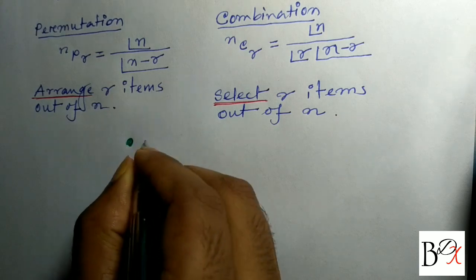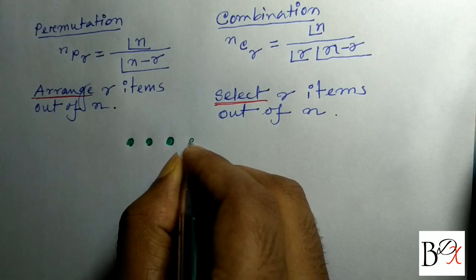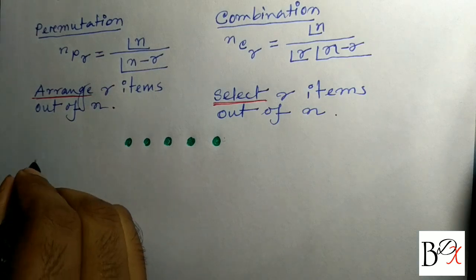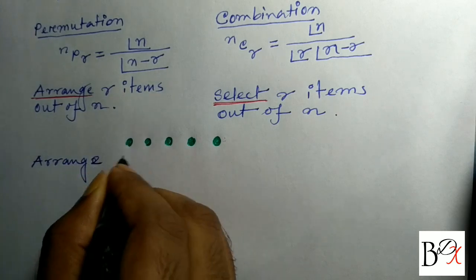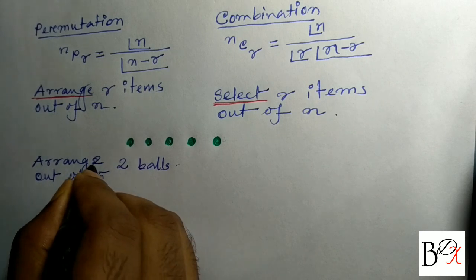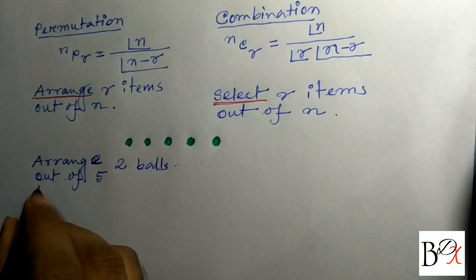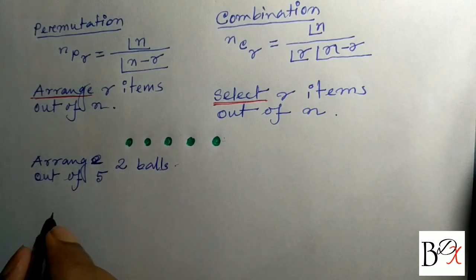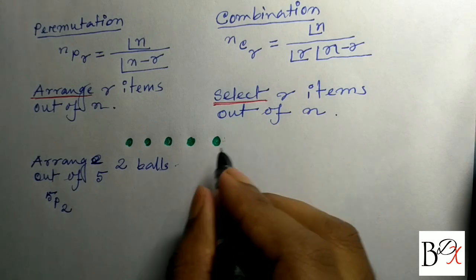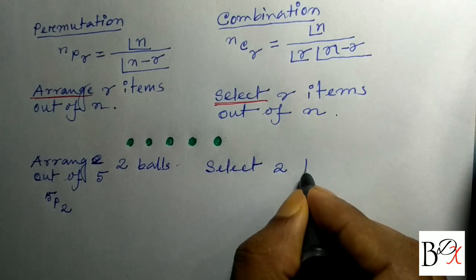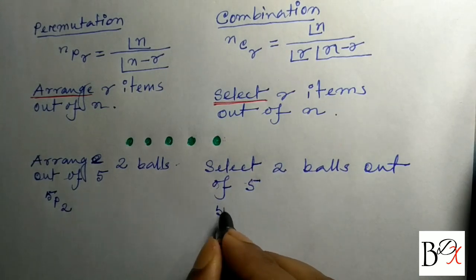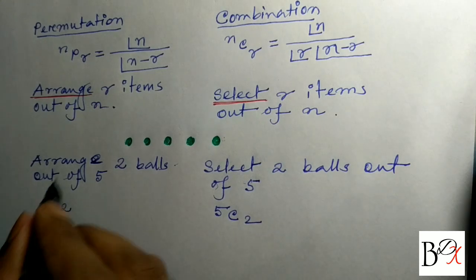Suppose we have a total of five balls. We want to select two balls out of five. For arranging two balls out of five, the answer is 5P2. For selecting two balls out of five, the answer is 5C2.